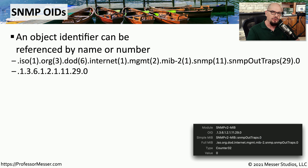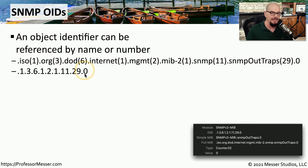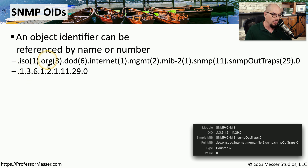To be able to retrieve those metrics from that remote device, we need to know what to ask for. The information that we're asking for is called an object identifier or an OID. These OIDs are series of numbers. You can see an example of an SNMP OID: 1.3.6.1.2.1.11.29.0. Each one of those numbers is referring to a different part of the SNMP tree. The first number 1 refers to ISO, the second number 3 refers to ORG, the third number 6 refers to DOD, the next number 1 refers to internet, and so on.